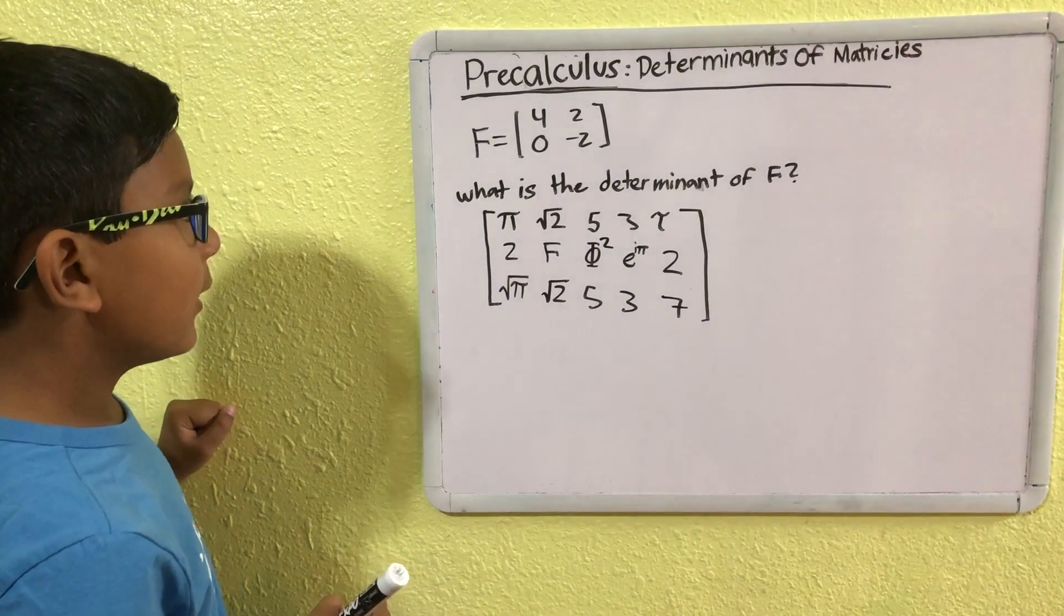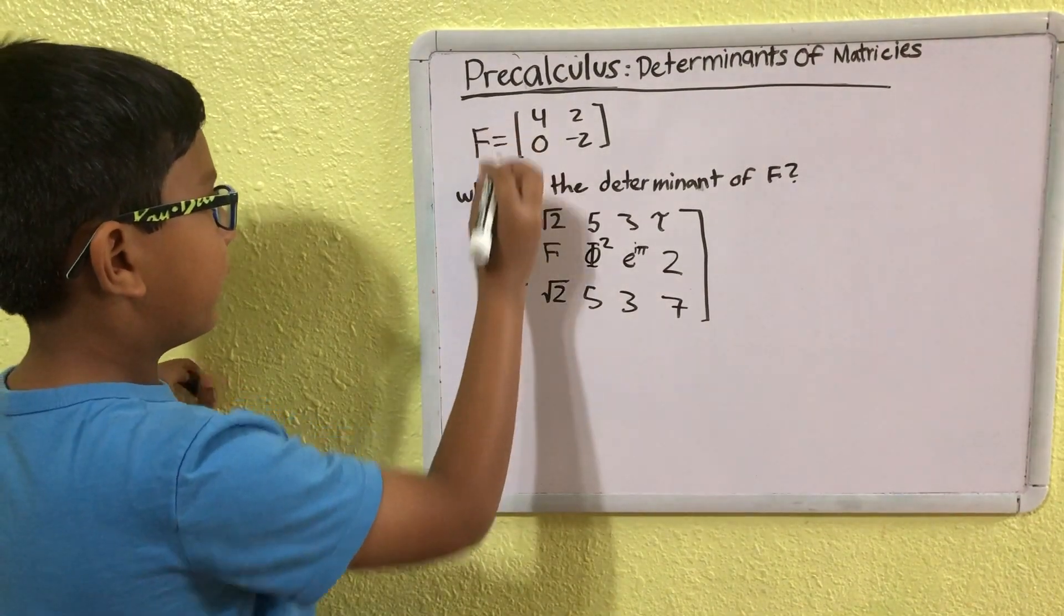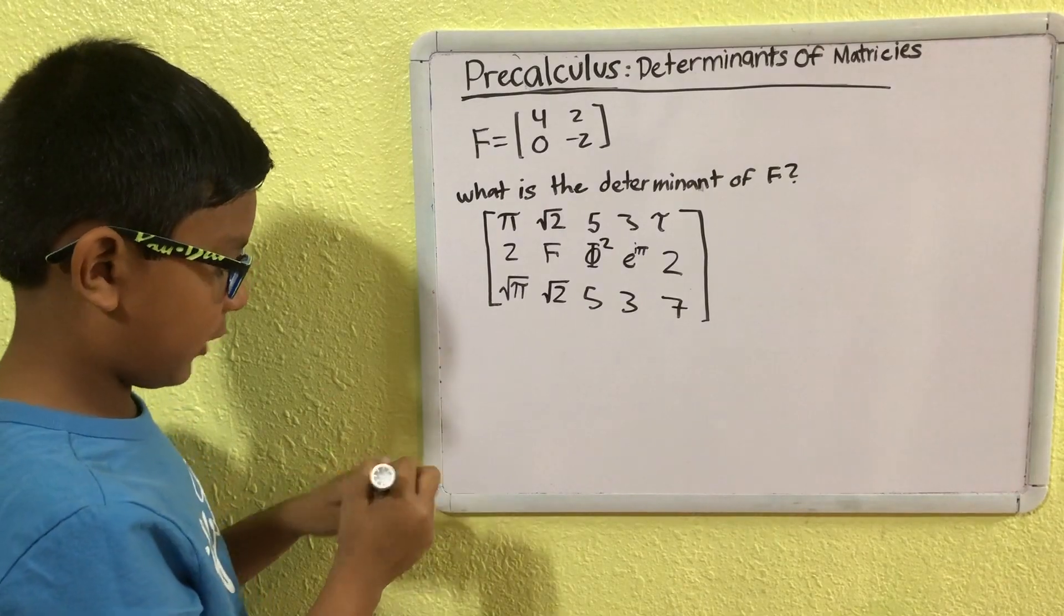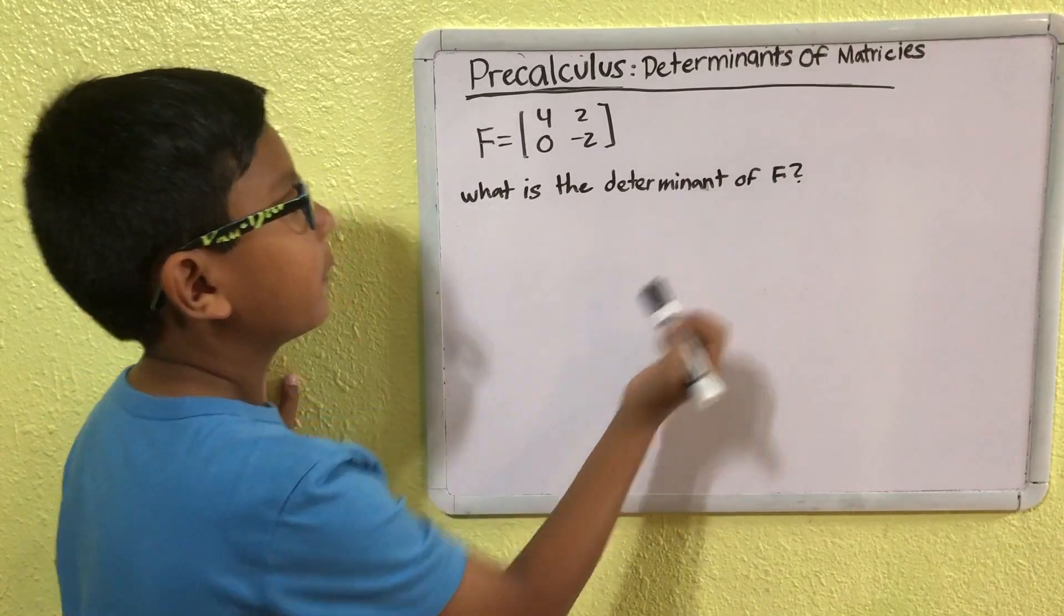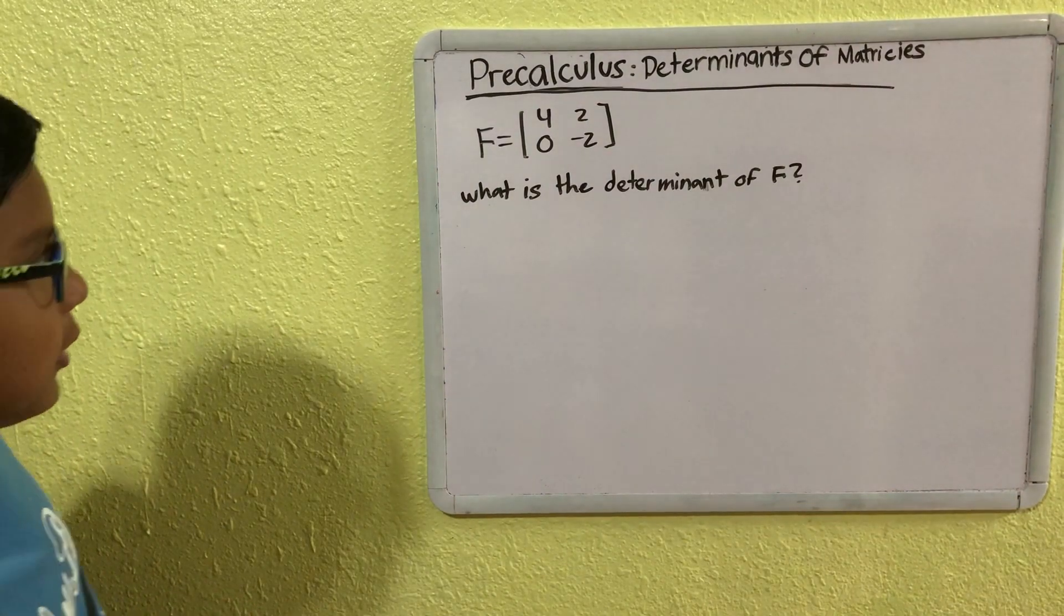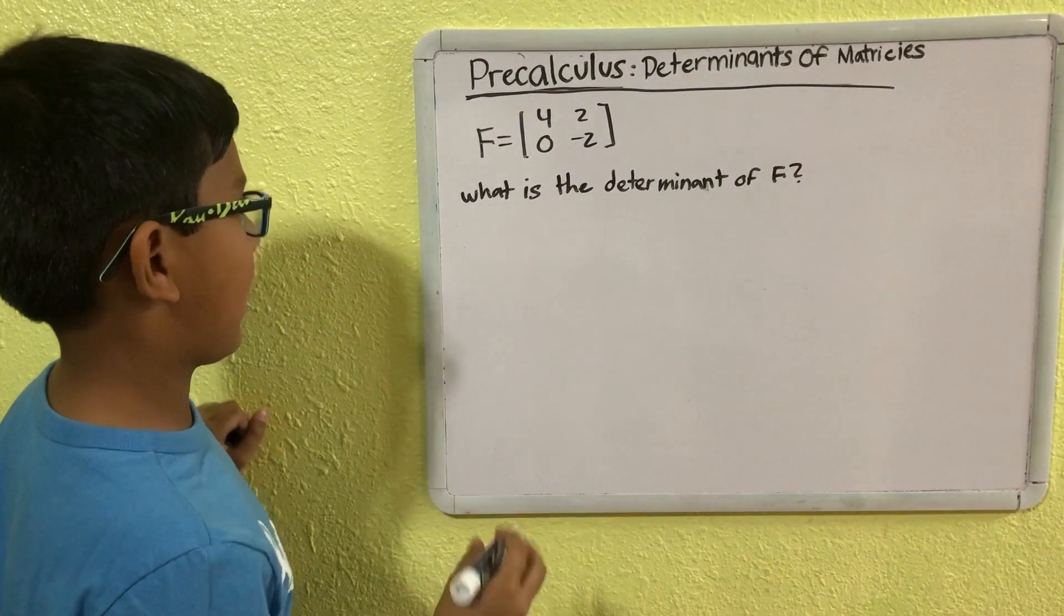Now, so we have a determinant of a matrix. What is the determinant of F? So, now that we know what a matrix is, we can go ahead and take a stab at it.